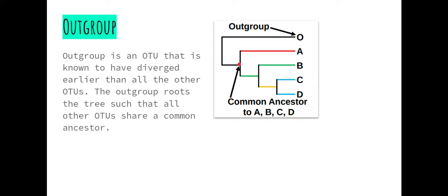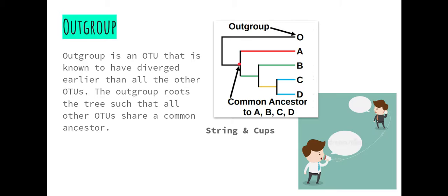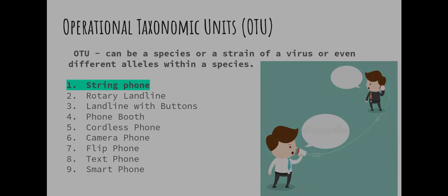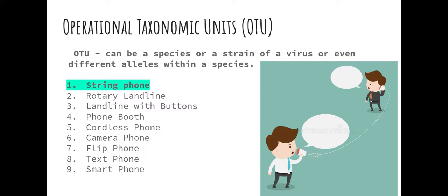As we are looking at phones today, our outgroup will be the string phone as it is clear common ancestor of all other phones. Keep in mind that this scenario is hypothetical and the details are simplified to get the idea across more than the semantics.